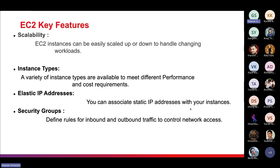The second key feature is instance type. A variety of instance types are available to meet different performance and cost requirements. EC2 provides different kinds of instance types — for a small organization application you might need a small RAM or CPU, but for a state-wide application you need bigger RAM and CPU. There are different options and you pay only for what you select.